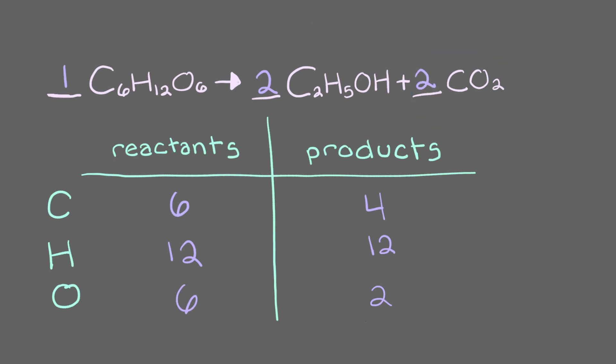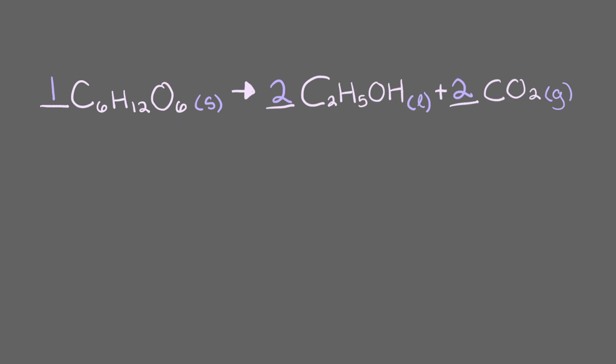Putting a coefficient of 2 in front of CO2 adds 2 more carbons and 4 more oxygens to the right-hand side of our equation. Now, look at our overall equation and the table we've constructed. Do you think we're done balancing the chemical equation? Right! This equation is balanced perfectly. Just remember to always add the states of matter back into the equation once you are done.